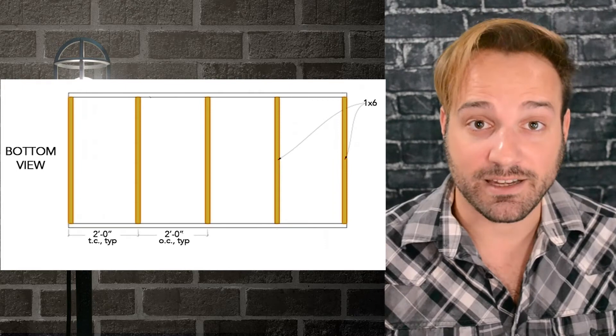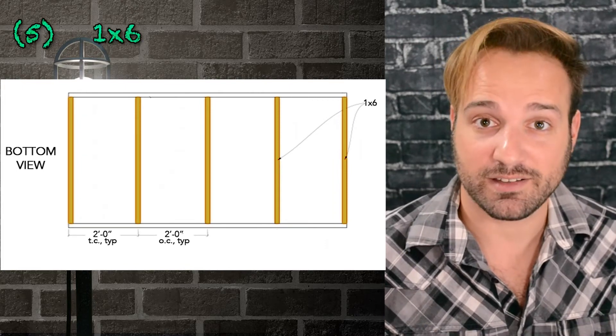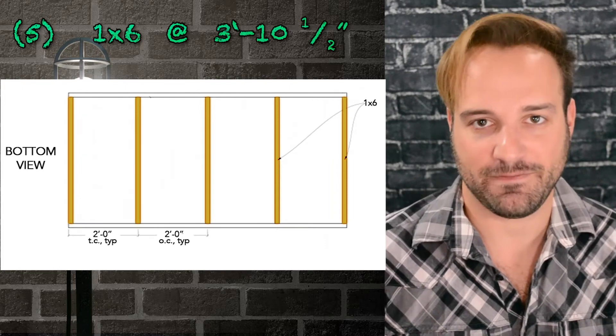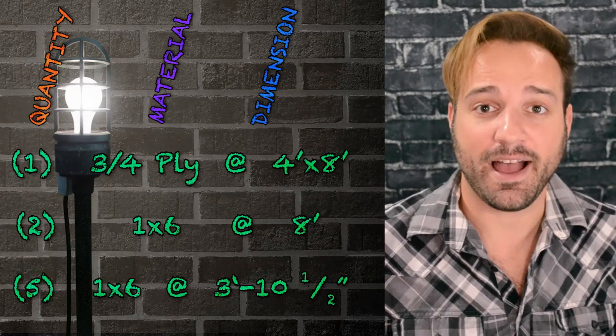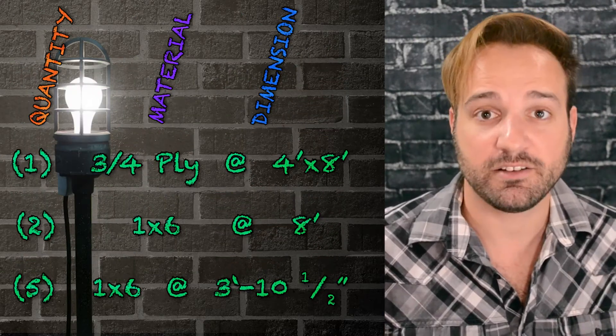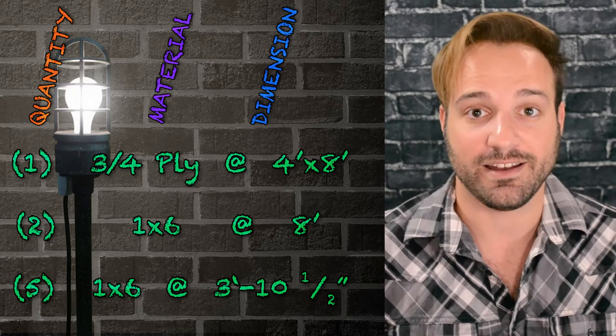So, for that piece, I need five. Again, we're doing one by six at three feet ten and a half inches. And that is my cut list. I have the number of all the pieces that I need, all of the materials I need, and the measurements that they're cut in.